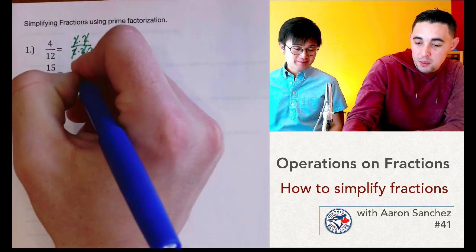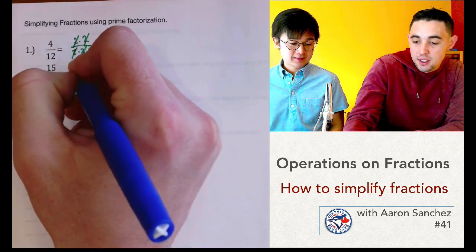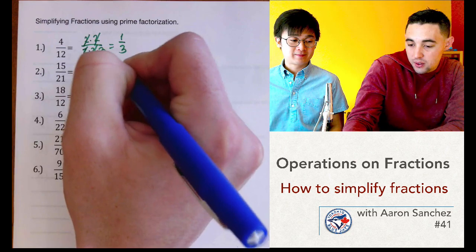Same thing for question number 2. 15, you can break it down to 5. Cancel that out. The answer is 5 over 7.